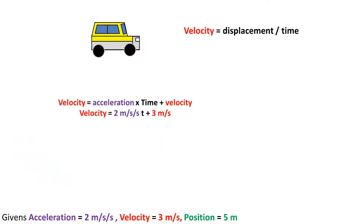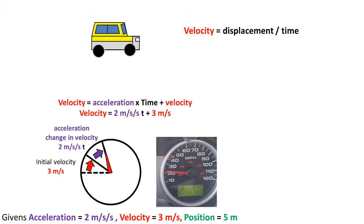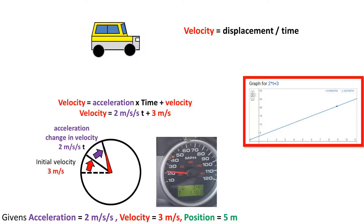Now let's move on to the velocity equation. The velocity, or displacement over time equation, is: velocity equals acceleration times time plus initial velocity. To illustrate this, we can think of a speedometer. We have two factors adding to where the location of the dial of the speedometer is. The first is initial velocity, which is 3 meters per second. Then we can add the second factor, which is acceleration, or change in velocity over time, of 2 meters per second per second times time. Plugging in time, we get the velocity value displayed on the speedometer at that given time. To the right, I have a graph that shows the relationship of the velocity equation over time, for your reference.